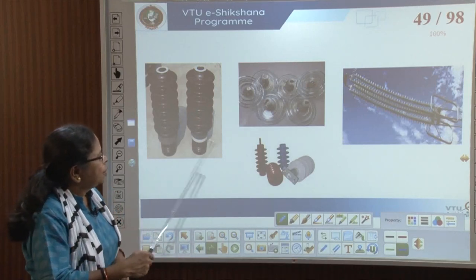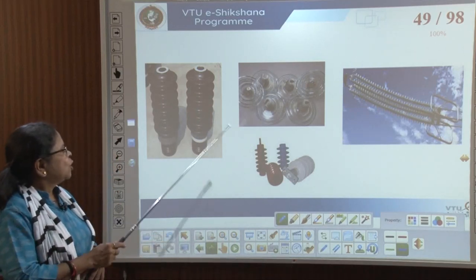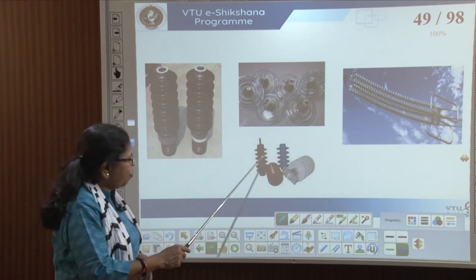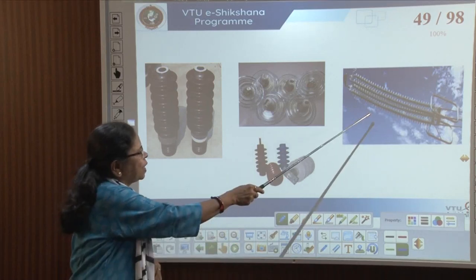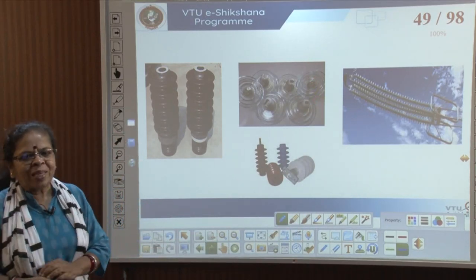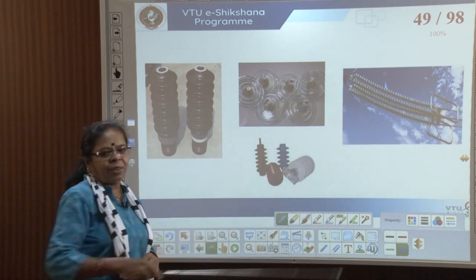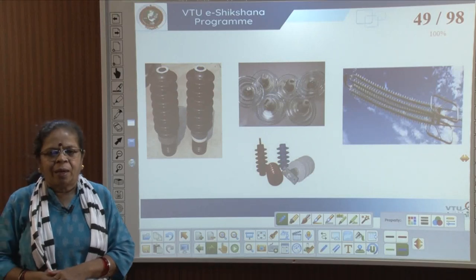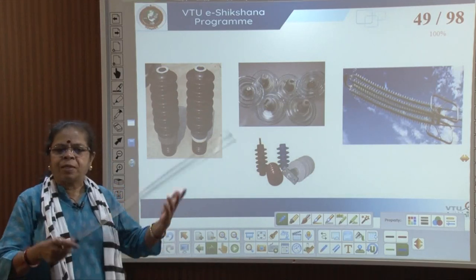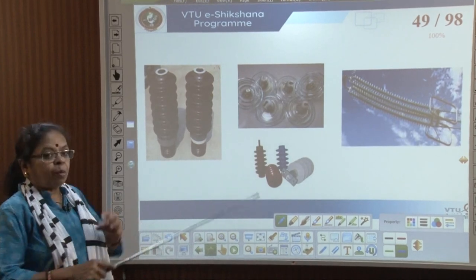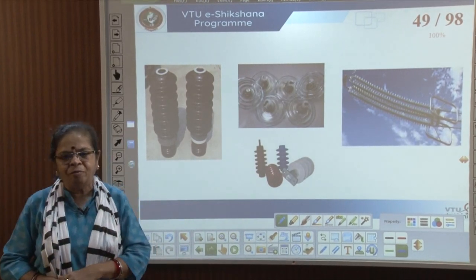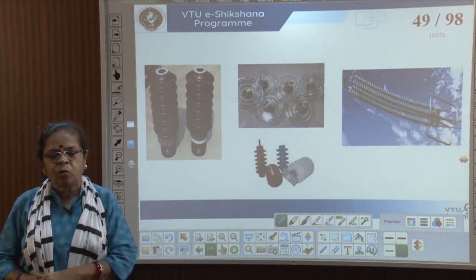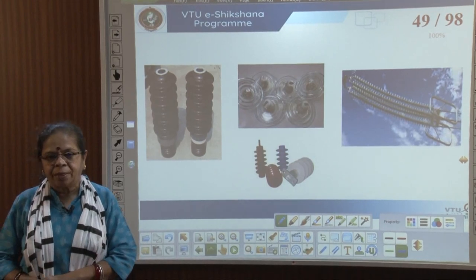Insulators of different materials can be seen: porcelain, glass of different colours, and silicone polymer. The polymers are lightweight. The commonly seen brown-coloured insulators have a glaze — that glaze improves the strength and resistivity of the insulator.